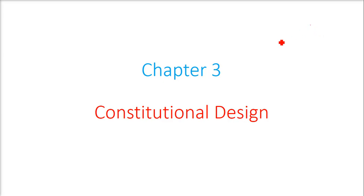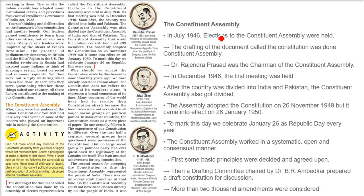We are looking at Chapter 3: Constitutional Design. The Constituent Assembly, or Samvidhan Sabha, was made in July 1946. Elections were held for constituting the Constituent Assembly, and the drafting of the constitution was done by this Constituent Assembly only.